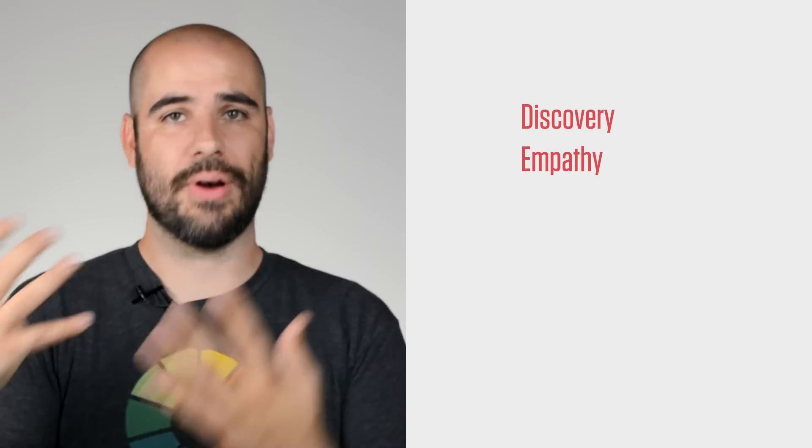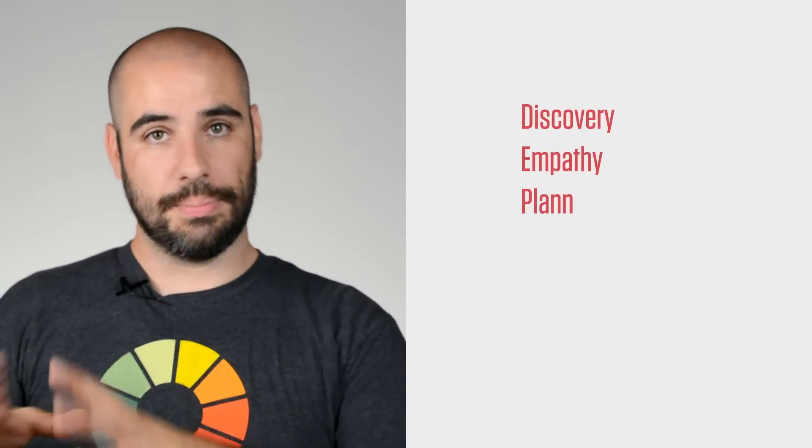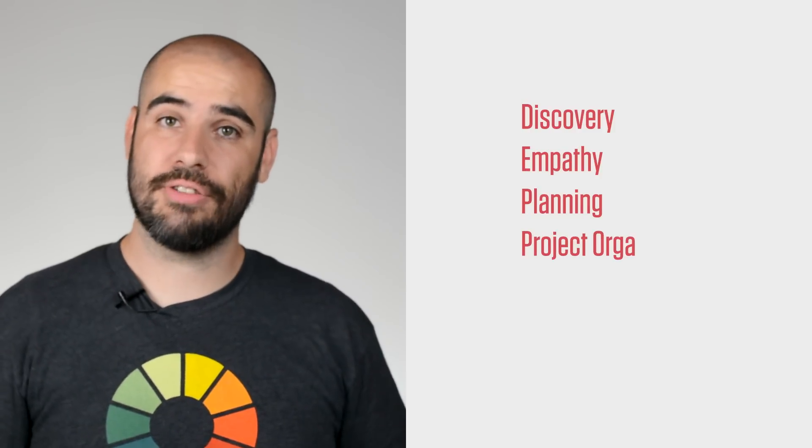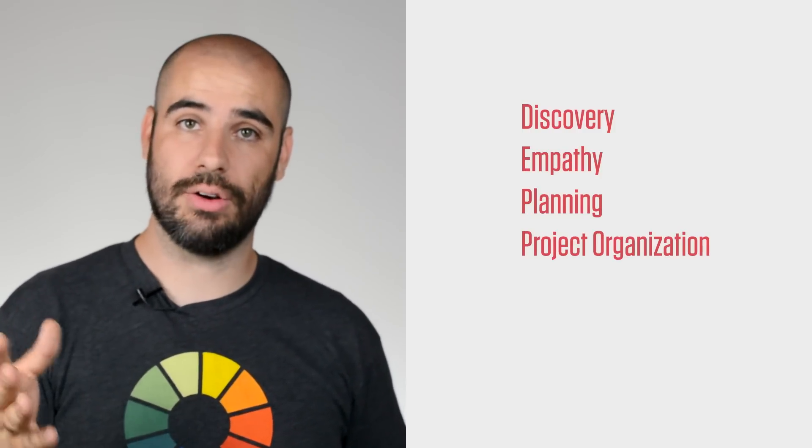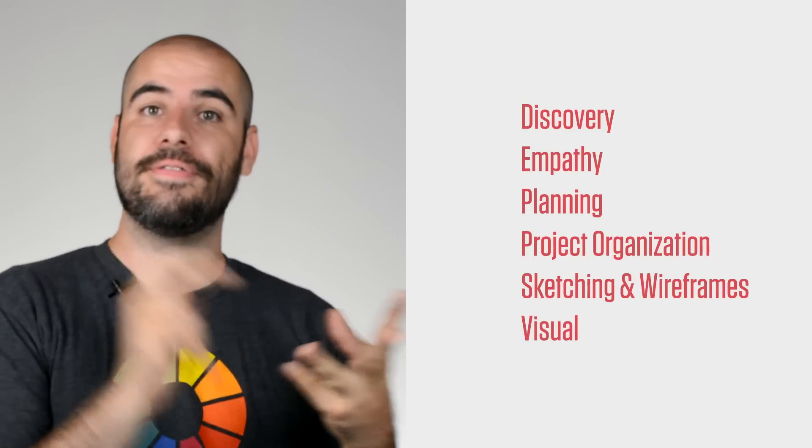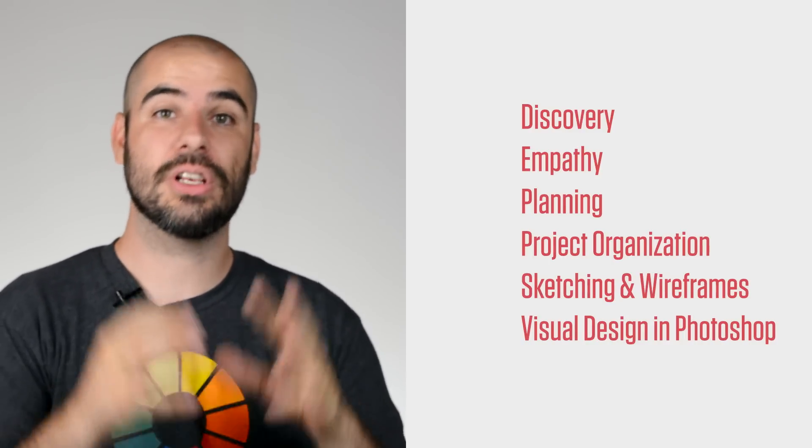Let's talk about the skills we specifically used through this project. In the beginning we talked about the discovery process — discovery, empathy, planning, and organization through Trello. We talked about sketching, wireframing, and visual design in Photoshop. There are a lot of these skills you could use professionally and get paid a lot of money to do, and we covered all of them quite early in the series.